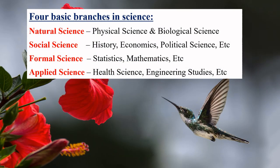There are four basic branches in science: natural science, social science, formal science, and applied science. Natural science includes physical science and biological science. Social science includes history, economics, political science, etc.